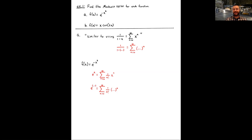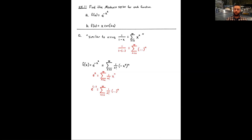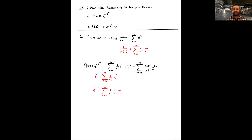All we have to do is take the general power series for e to the x and plug in negative x squared. We plug that into the exponent, giving us e to the negative x squared, and then substitute negative x squared into the summation — being careful to take the nth power of negative x squared. The calculations are very minimal once you've developed the Maclaurin series, and the problem is simple if you were comfortable with finding series related to 1/(1−x).